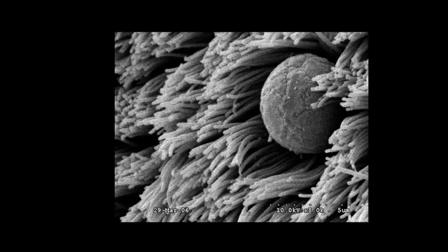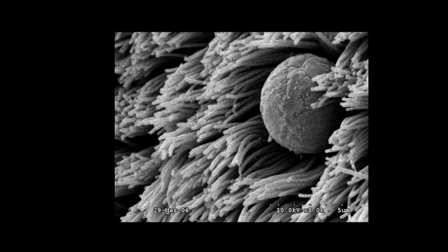Shown here is an electron microscope image of a motile cilia. They are present in large numbers per cell. Shown here is an electron microscope image of a primary cilia. They are present as a single copy per cell, and they do not beat.